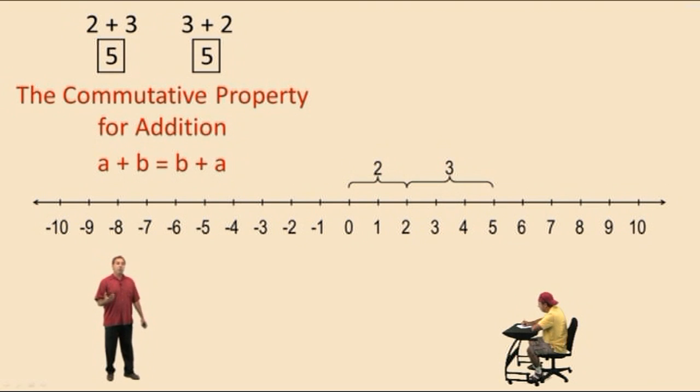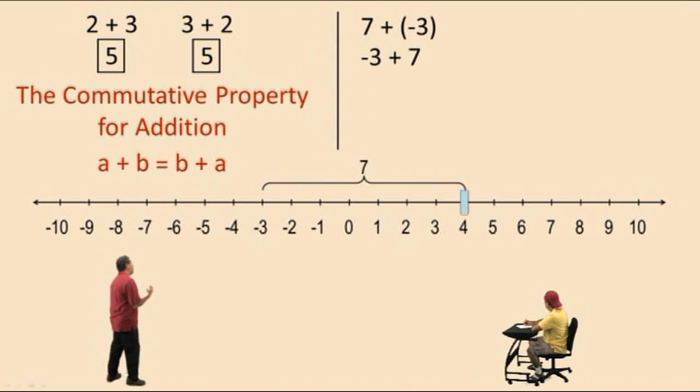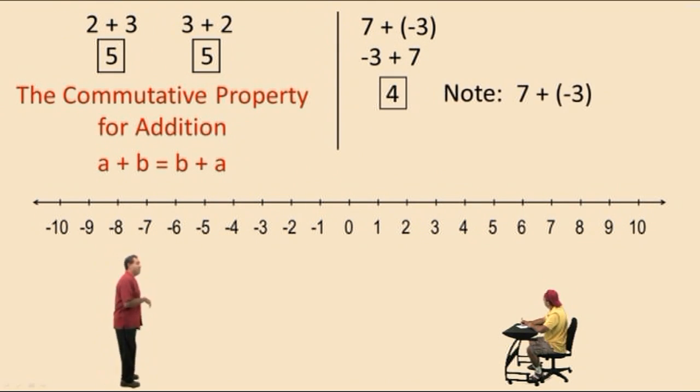Well, where this property will become useful is when we start talking about adding negative numbers, like seven plus a negative three. By the commutative property, we can switch the order and change it to negative three plus seven. Now let's do negative three plus seven on the number line, and notice we get four. So this is telling us that seven plus a negative three is the exact same as seven subtract three, and they both equal four.